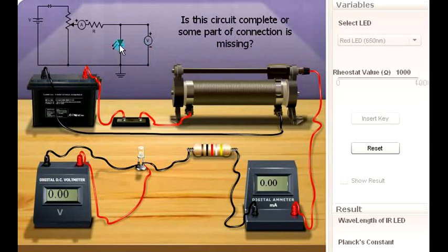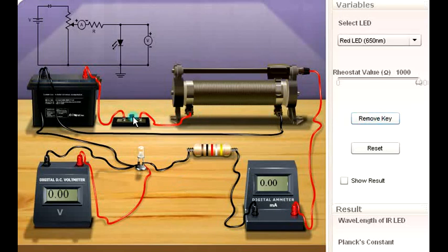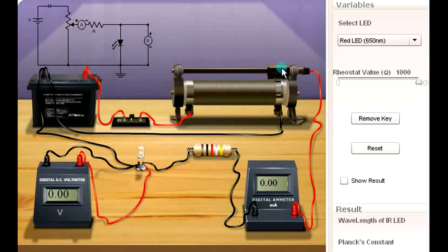According to this diagram, the negative terminal of the voltmeter and negative side of the LED is not connected with the battery. I have to connect now this wire with the negative terminal of the battery. Now circuit is complete. I am inserting the key by using this tab. If I will remove it, it will remove. Now I will just move this point on the rheostat.